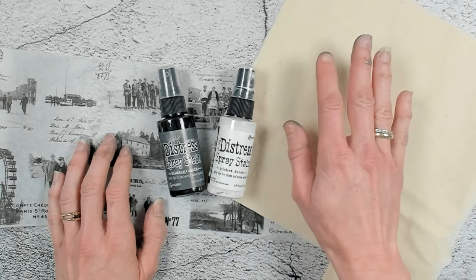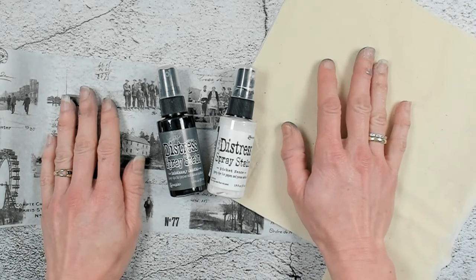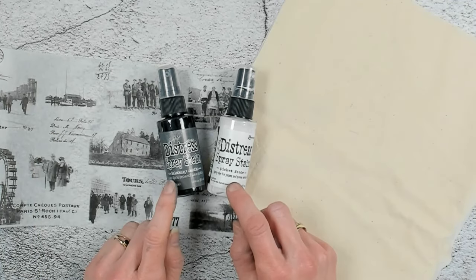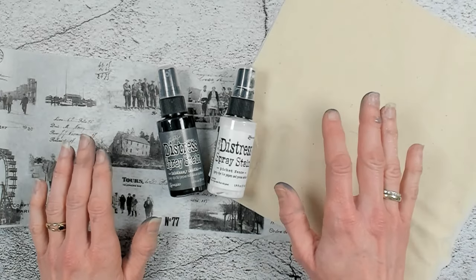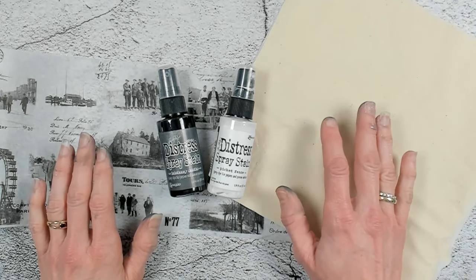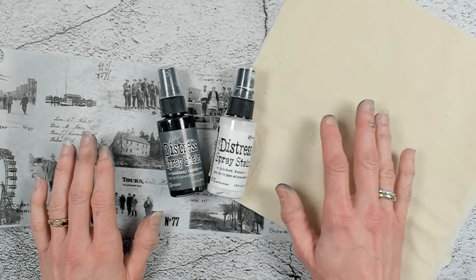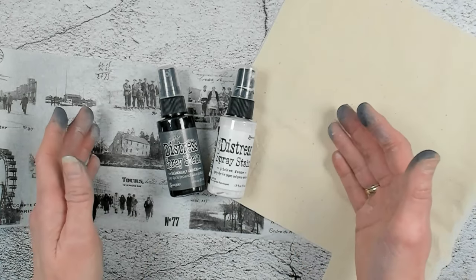For today I would like to create something with a fabric, Tim Holtz collage paper and some Distress Spray Stain. The tutorial for today will be very, very easy, quick and simple to make. So it is very beginner friendly. Let's get started.